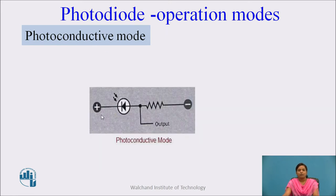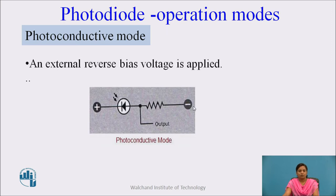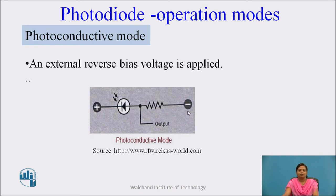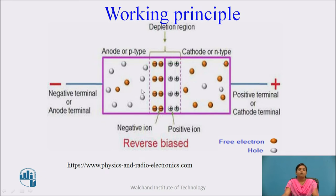In photoconductive mode, external supply is applied to the photodiode, and the photodiode works in reverse biasing mode. The positive terminal of the external DC source is connected to the cathode, and the negative terminal is connected to the anode. Basically, the photodiode operates in photoconductive mode.